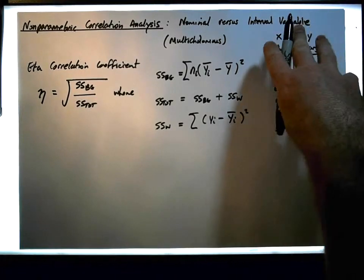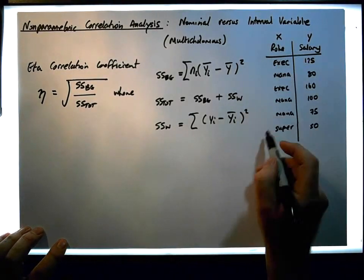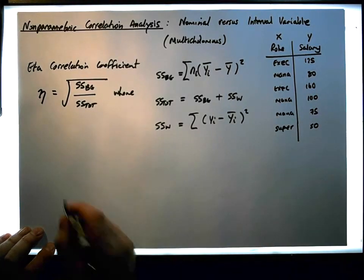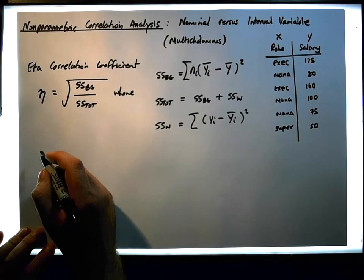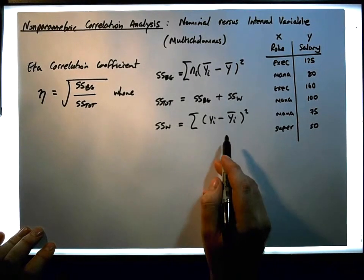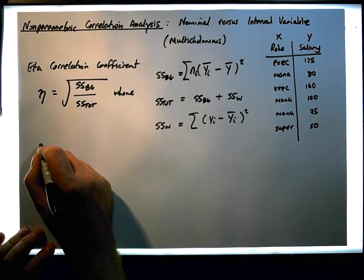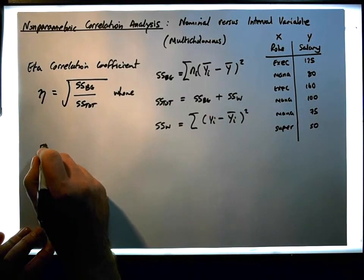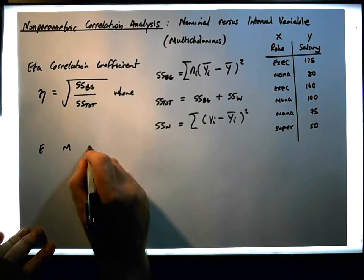So what we're going to do is take all of these observations and create a table from them. Exec represents E, manager represents M, and supervisor represents S. So what we have is E, M, S.